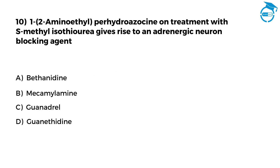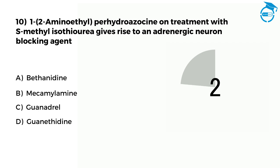Here is the last one — give it a try. 1,2-aminothiol perhydrozocine on treatment with S-methyl isothiourea gives rise to an adrenergic neuron blocking agent. Option A: Bethanidine. Option B: Mecamylamine. Option C: Guandryl. Option D: Guanethidine. Post your answer in comments — only 7 seconds left. The right option is D, that is Guanethidine.